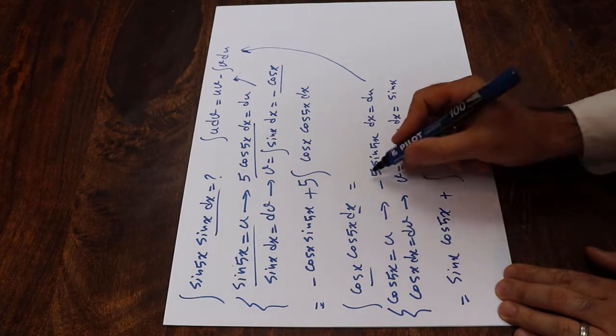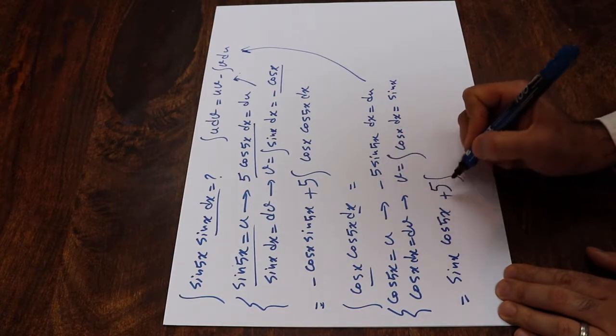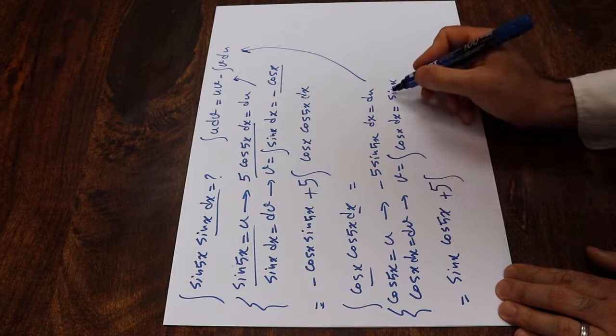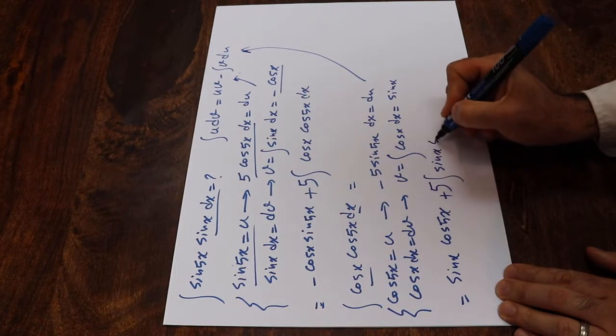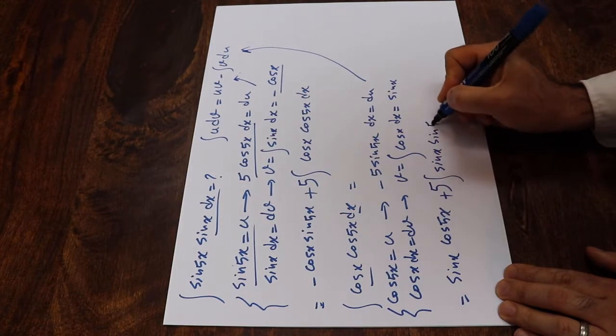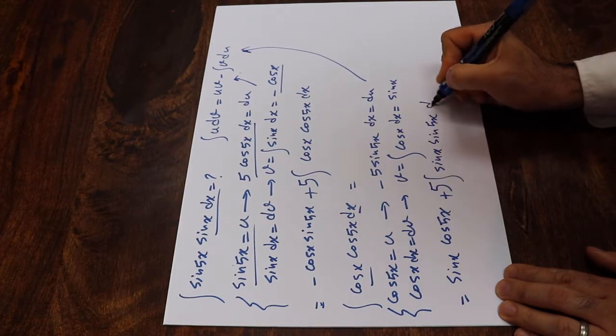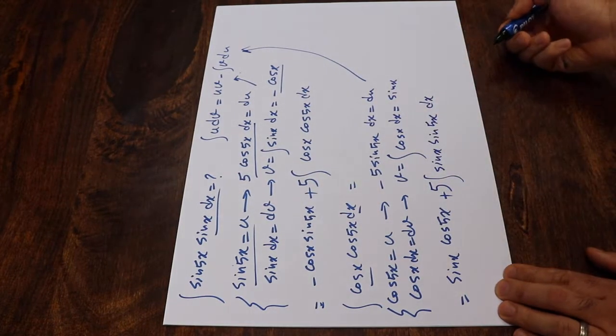This minus times this minus will be plus, and 5 comes out as a constant. So the result is sin x sin 5x dx — giving plus 5 times the integral of sin x sin 5x dx.